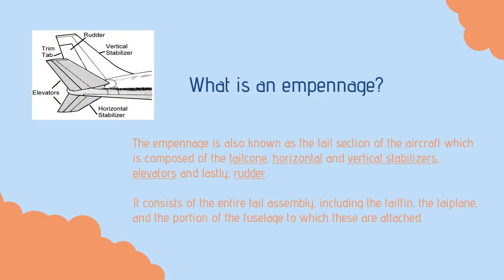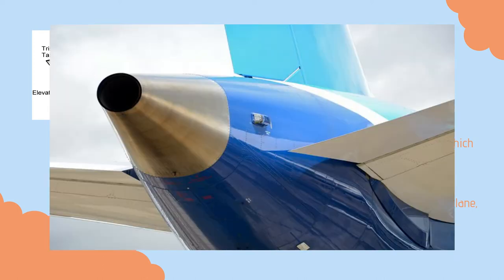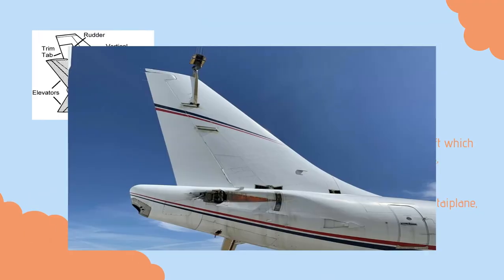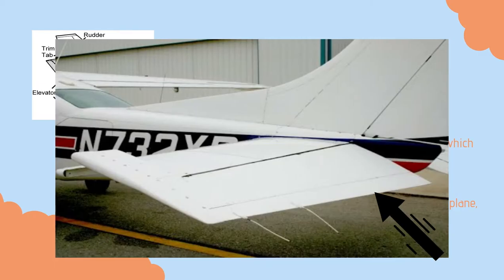What is an empennage? The empennage is also known as the tail section of the aircraft, which is composed of the tail cone, horizontal and vertical stabilizers, elevators, and rudder.